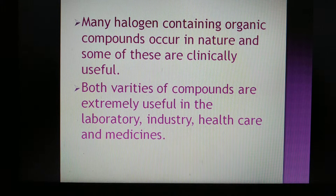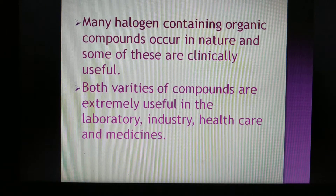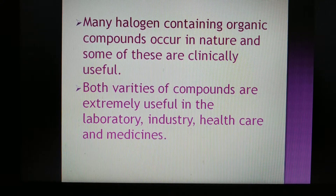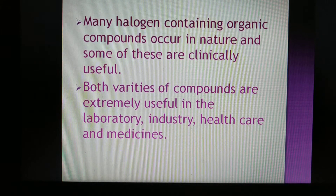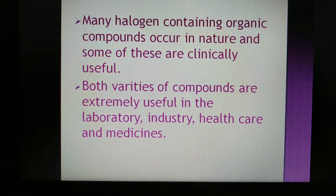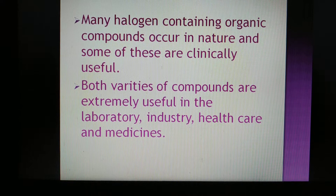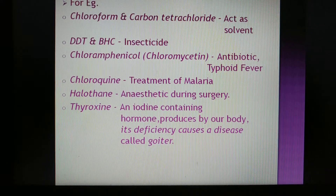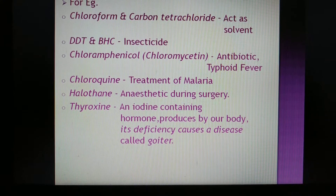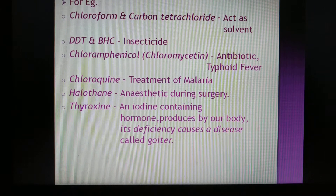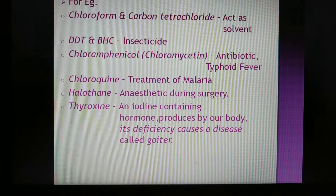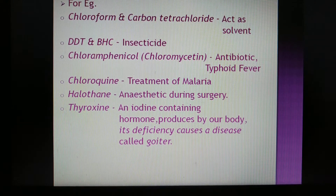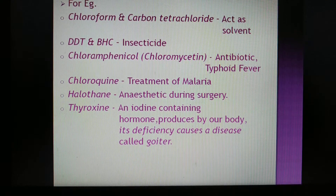Many halogen-containing organic compounds occur in nature and are clinically very useful. Both varieties — haloalkanes and haloarenes — are extremely useful in labs, industries, healthcare, and medicines. For example, chloroform and carbon tetrachloride both act as solvents. DDT and BHC are well-known insecticides used for insect control.